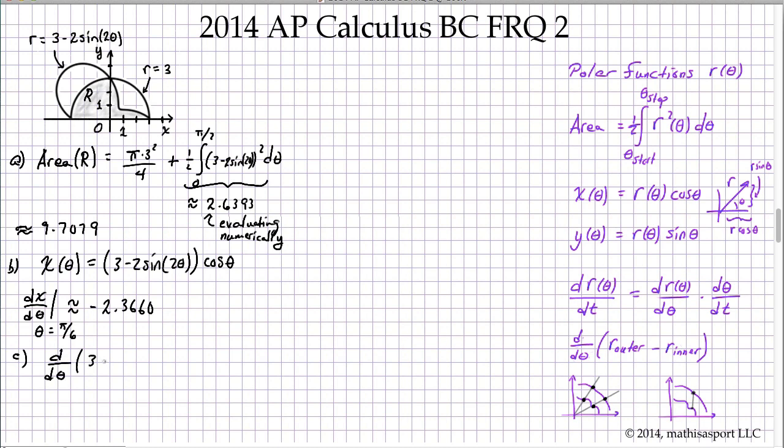We know in the first quadrant r_outer minus r_inner, we can see from the picture, is going to be a positive quantity, so we're working with distance. We've got the sign right, and so all we're really being asked to find is d/dθ of (3 - (3 - 2sin(2θ))), and then we're asked to evaluate that at θ equals π/3.